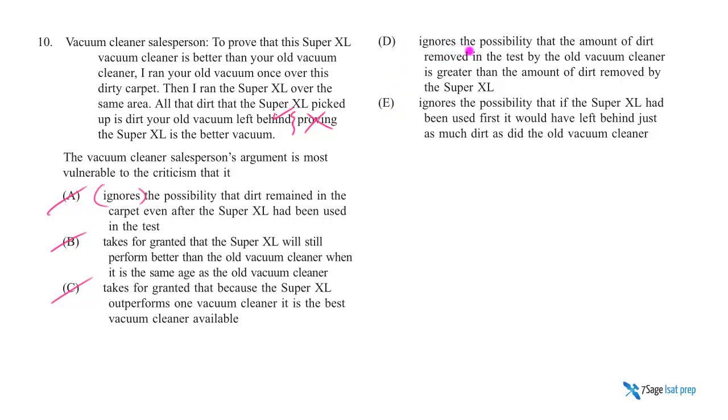D, let's take a look at why D is wrong. Ignores the possibility that the amount of dirt removed in the test by the old is greater than the amount of dirt removed by the Super XL. I think the reason D is wrong is because it doesn't ignore this possibility. If you told the salesperson, look at the chamber of my old vacuum, look at the chamber of your XL vacuum, it's got this much dirt, yours only has this much dirt...